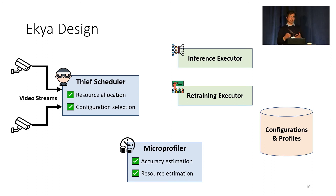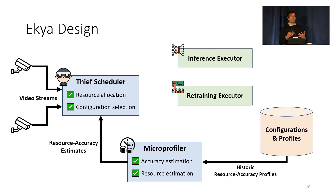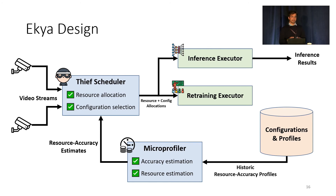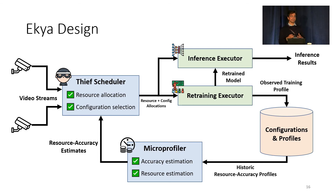Here is how data flows in our system. Incoming video streams go to the T-scheduler. The T-scheduler triggers the micro profiler, which fetches historic resource-accuracy profiles and runs a very aggressive hyperparameter sweep with aggressive early stopping to produce accuracy estimates. The T-scheduler uses these estimates to produce resource and configuration allocations for the executors. Once retraining completes, the retrained model is loaded into inference memory and the observed training profile is saved back to the pool of profiles.